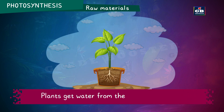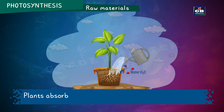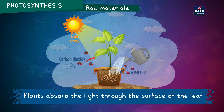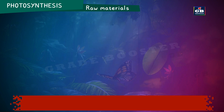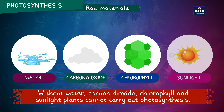Plants get water from the soil through roots, and light through the surface of the leaf. Water, carbon dioxide, chlorophyll and sunlight are all required — if any one of these components is missing, plants cannot carry out photosynthesis. Let us verify this with some activities.